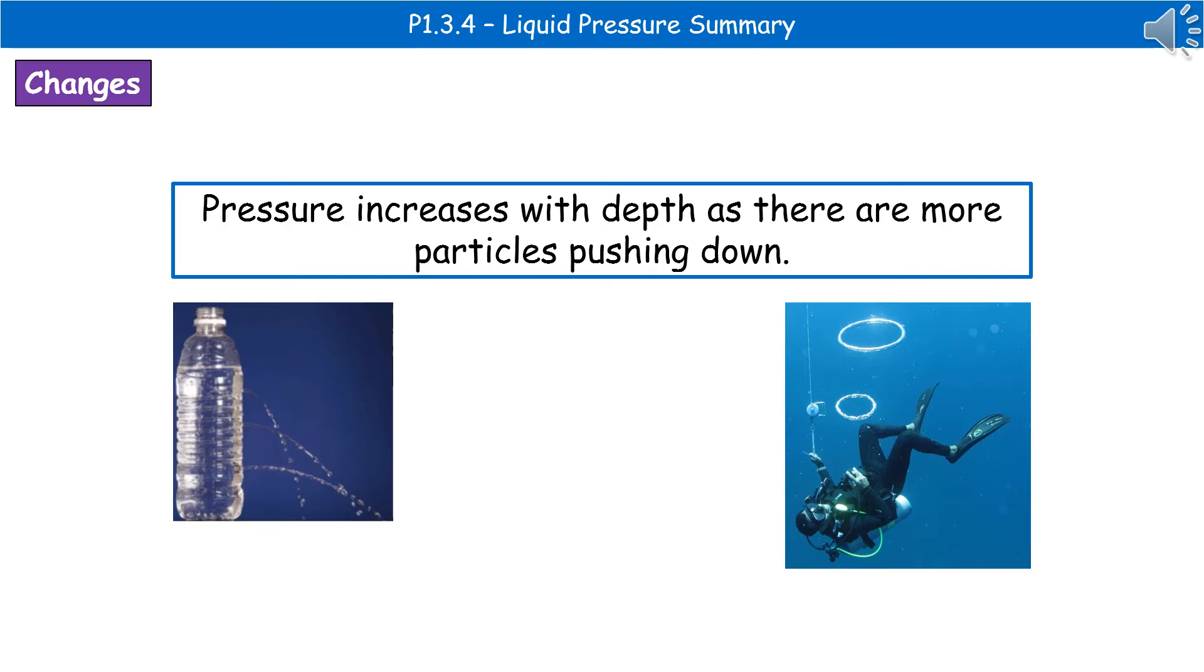So you can illustrate this in a couple of ways. On the left, we've got one of the very simple experiments you can do. If you put a few holes up the side of a bottle and fill it with water, then the hole at the very bottom will actually shoot the water a greater horizontal distance because it has a greater pressure compared to the one at the top, because there's more particles pushing down on it.